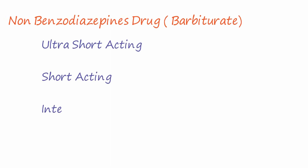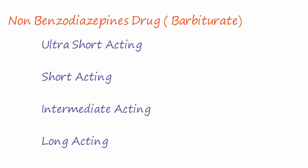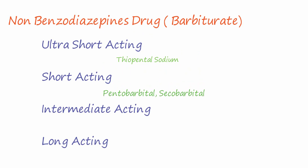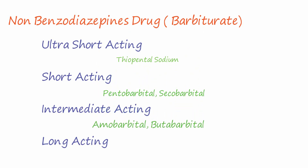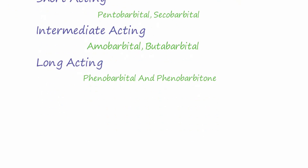Barbiturates are classified into ultra-short-acting, short-acting, intermediate-acting, and long-acting drugs. Ultra-short-acting drugs include thiopental sodium. Short-acting drugs include pentobarbital and secobarbital. Intermediate-acting drugs include amobarbital and butobarbital. Long-acting drugs include phenobarbital.